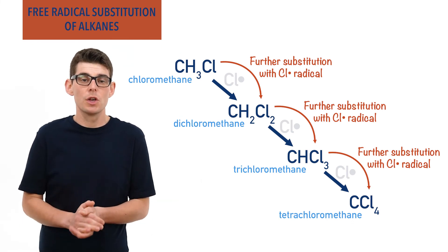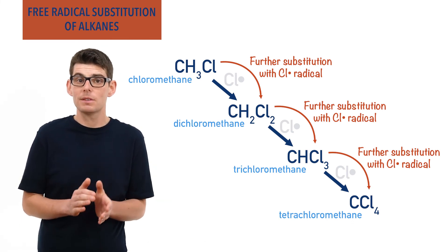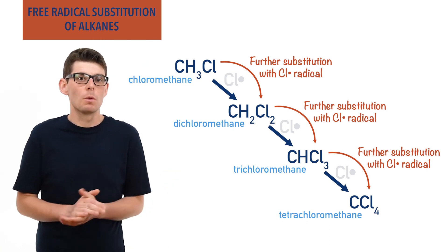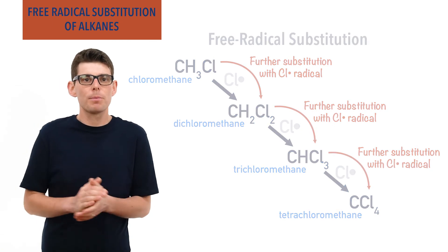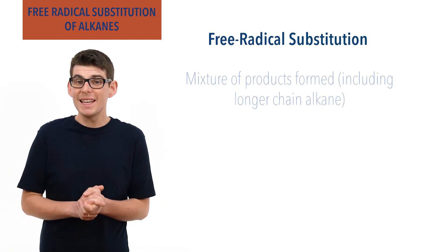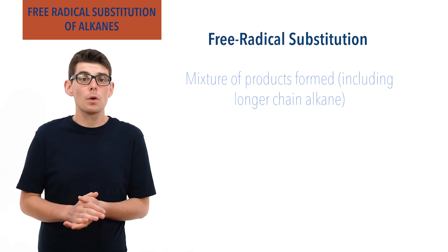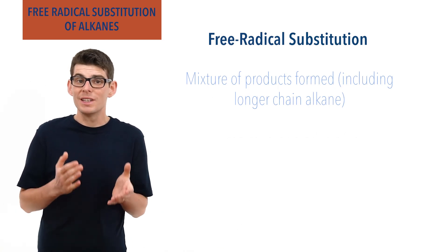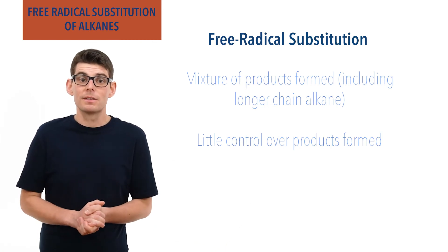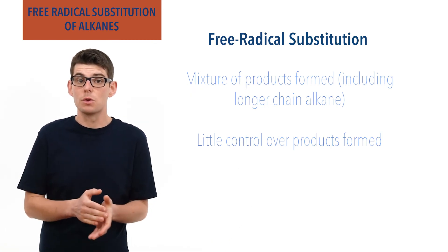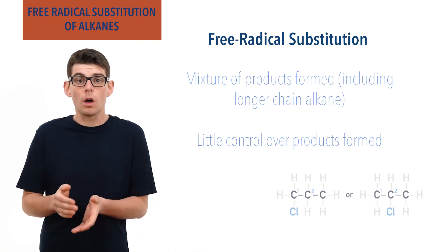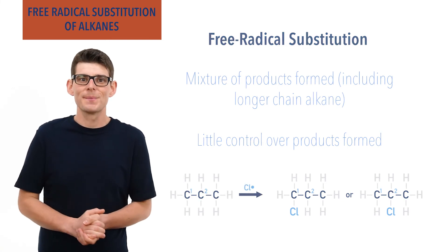It all gets a bit crazy. At this level, don't panic too much — you are usually just asked to outline the mechanism and steps for one substitution and be aware that further substitutions can occur. These extra products and the formation of a longer chain alkane — ethane in our example — mean that free radical substitution isn't a very effective way of making chloro or bromoalkanes in industry, as there is little control over the reaction and a complete mixture of substances is formed. For longer chain alkanes, there is also no control over where the substitution will occur — for example, a chloro or bromo group could end up on carbon 1 or carbon 2 if propane underwent free radical substitution.